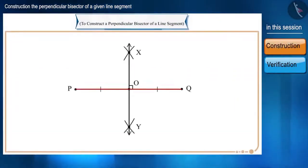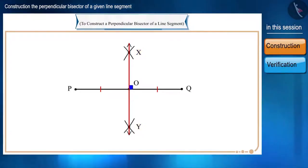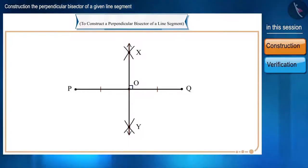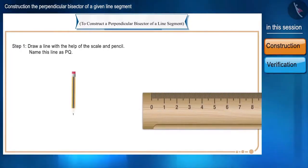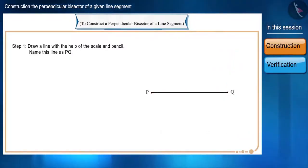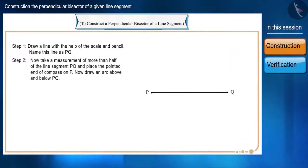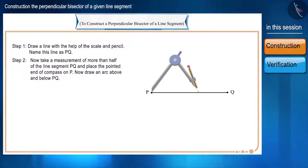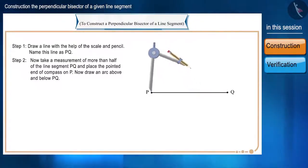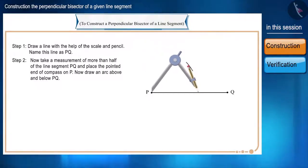Let's assume we have to construct the perpendicular bisector of PQ. So, let's start the construction. The steps for this construction are as follows. With the help of a scale and pencil, draw a line segment and name it PQ. Now, taking a measurement of more than half of the line PQ, place the pointed end of the compass on P and draw an arc above and below PQ.